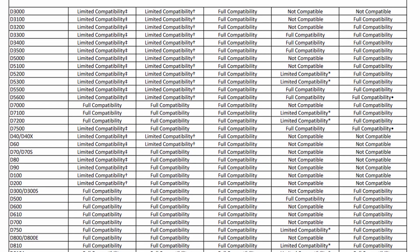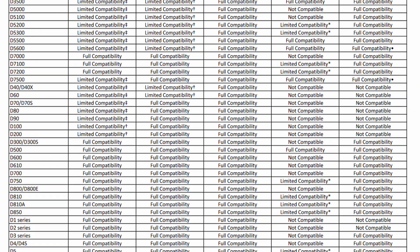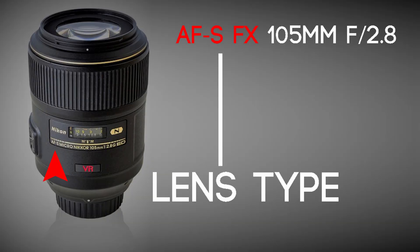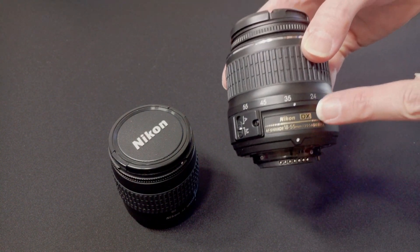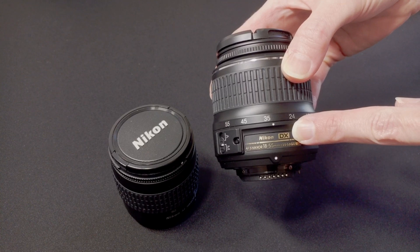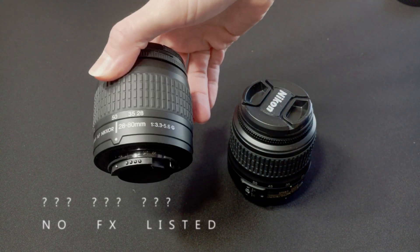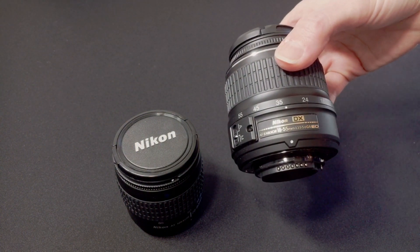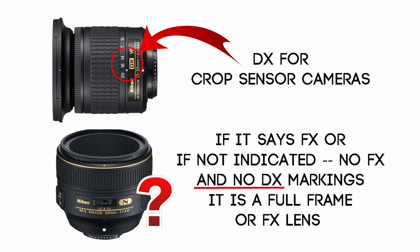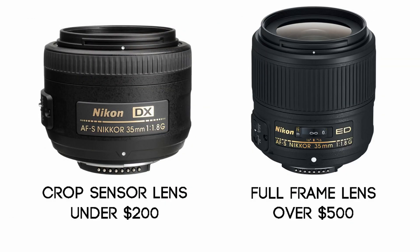Nikon has a detailed compatibility chart on their website, and I've included a link in the description. Elsewhere on the lens or in the lens's formal description will be the letters that signify crop sensor or full frame. Crop sensor lenses are DX lenses; full frame lenses are FX lenses. The FX may not always be noted on the lens but should be in the description. If you don't see FX or DX on the side of the lens, it is most likely an FX lens. DX lenses are less expensive and lighter in weight, while FX lenses are more professional with better build quality and are therefore more expensive.